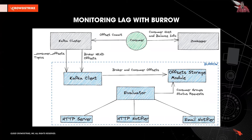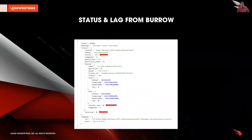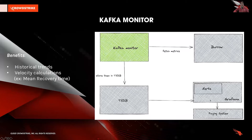We use Burrow for monitoring Kafka consumer group lag. Burrow is an open-source monitoring solution from LinkedIn for Kafka that provides consumer lag checking as a service. It monitors committed offsets for all consumers and calculates the lag and status of these consumers on demand. The metrics are exposed via an HTTP endpoint. As seen here, Burrow exposes both status and lag information in a structured format for a given consumer group across all the partitions of the topic. However, there is one drawback — it only presents a snapshot of consumer group lag. So we built a system called Kafka Monitor, which fetches these metrics from Burrow and stores them in a time series database, enabling us to analyze historical trends and perform velocity calculations like mean recovery time from lag for a given Kafka consumer.